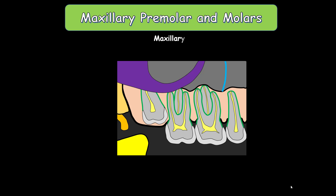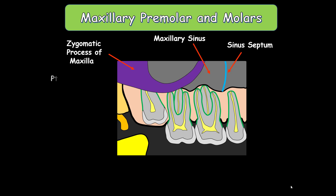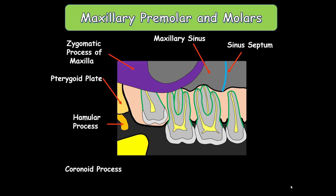So what landmarks do we see in this region? The maxillary sinus, the sinus septum, the zygomatic process of the maxillary bone, the pterygoid plates of the sphenoid bone, the hamular process, the coronoid process, and the maxillary tuberosity.